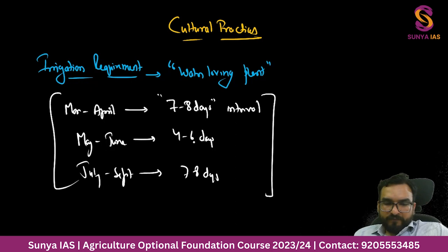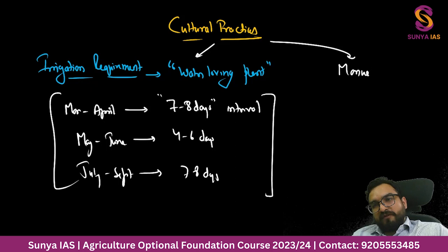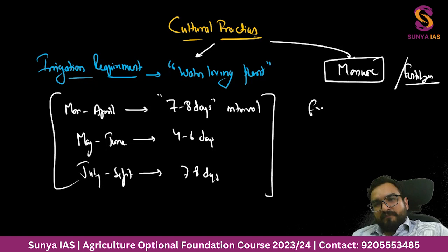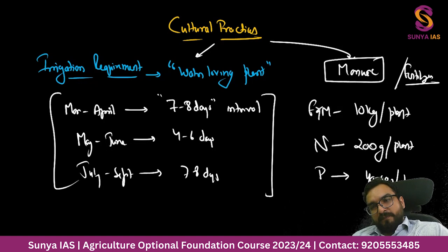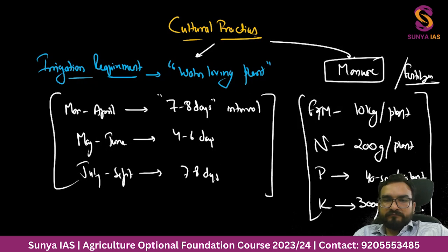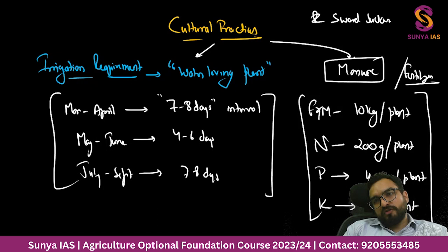For fertilizer and manure requirements: FYM is added at 10 kg per plant. Nitrogen requirement is 200 grams per plant. Phosphorus requirement is 40-50 grams per plant. Potassium requirement is 300 grams per plant. Remember these figures as they are. Also note the correction - the propagation method is sword sucker, not root sucker.